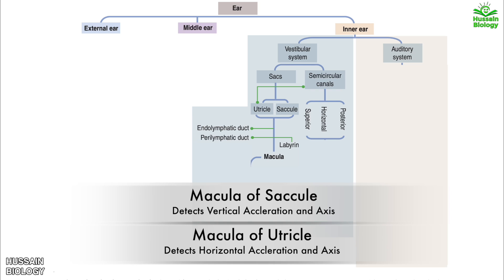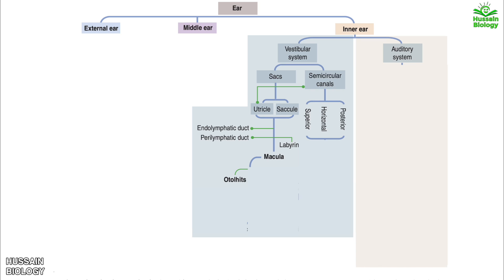It must be noted that both utricle and saccule form the otolith organ, which can sense orientation, movement, gravity, and linear acceleration. Furthermore, this otolith has sensory epithelium which consists of type 1 and type 2 hair cells like kinocilium and stereocilia.